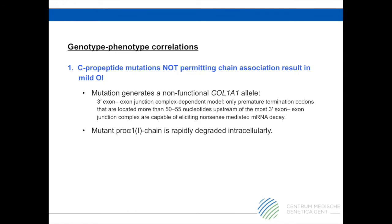Clear genotype-phenotype correlations emerge from this study. Pathogenic variants that do not allow association of the mutant chain generally result in mild OI. These can be divided in two groups. Firstly, pathogenic variants that generate a premature termination codon and induce nonsense-mediated mRNA decay lead to the production of haploinsufficient type 1 procollagen. In addition, a few pathogenic variants have been reported that lead to the production of mutant proα1 chains with an altered c-propeptide sequence, but which are rapidly degraded inside the cell and not included in the type 1 procollagen heterotrimer.